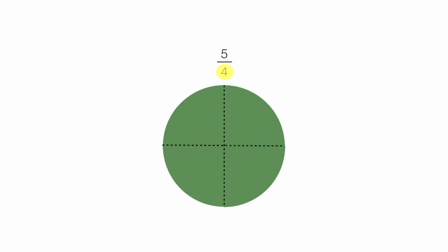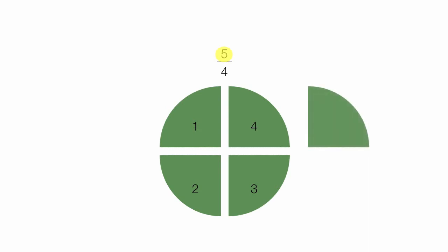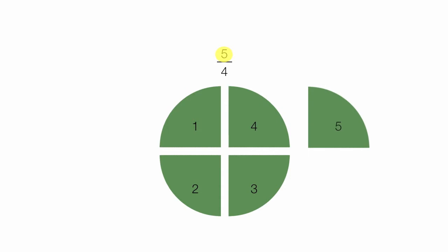First, let's start with 5 fourths. I'm going to take a circle and put it into 4 pieces — that's what that 4 in the denominator means. 5 means I need 5 pieces. Again, I have 4 pieces: 1, 2, 3, 4 — but I need 5. So I add 1 more fourth to give me 5 fourths. Each of these pieces are 1 fourth in size.